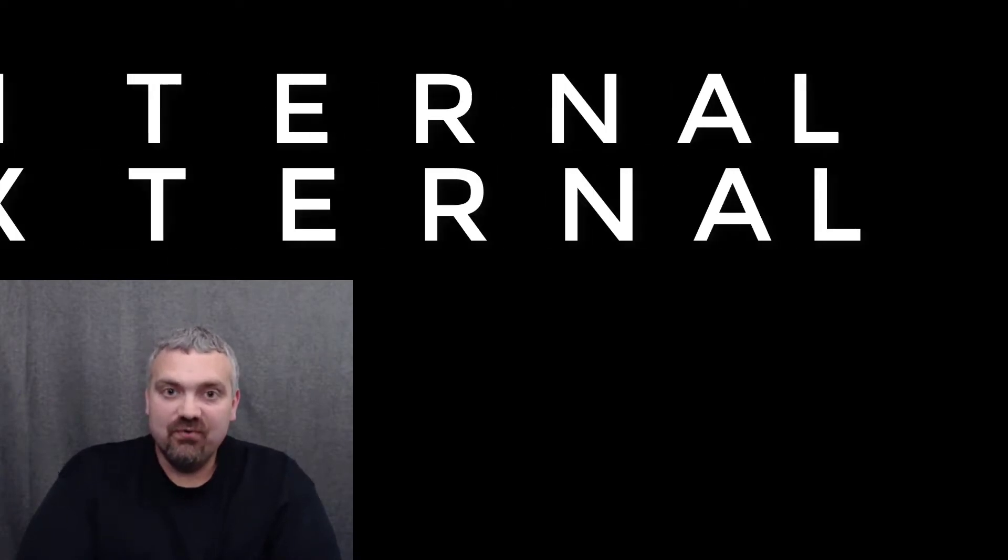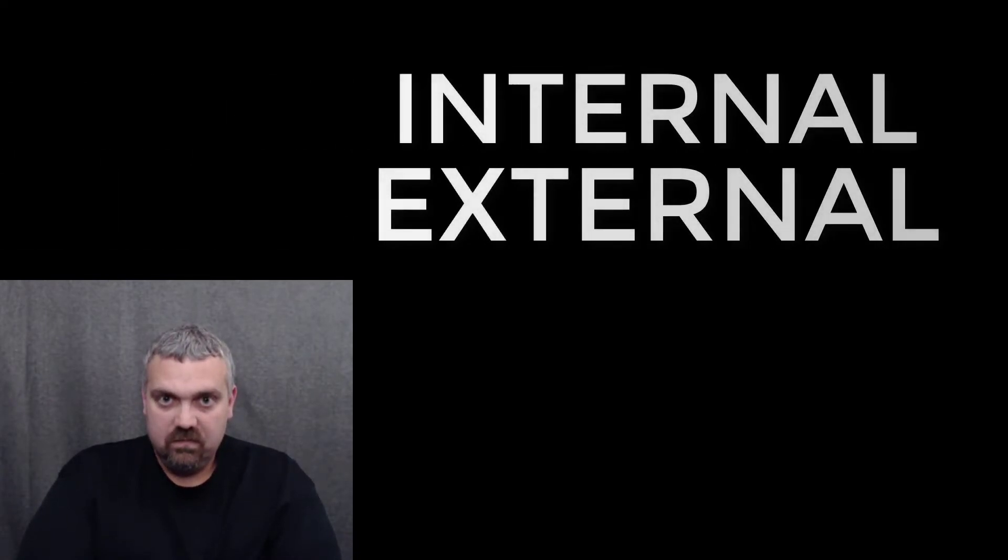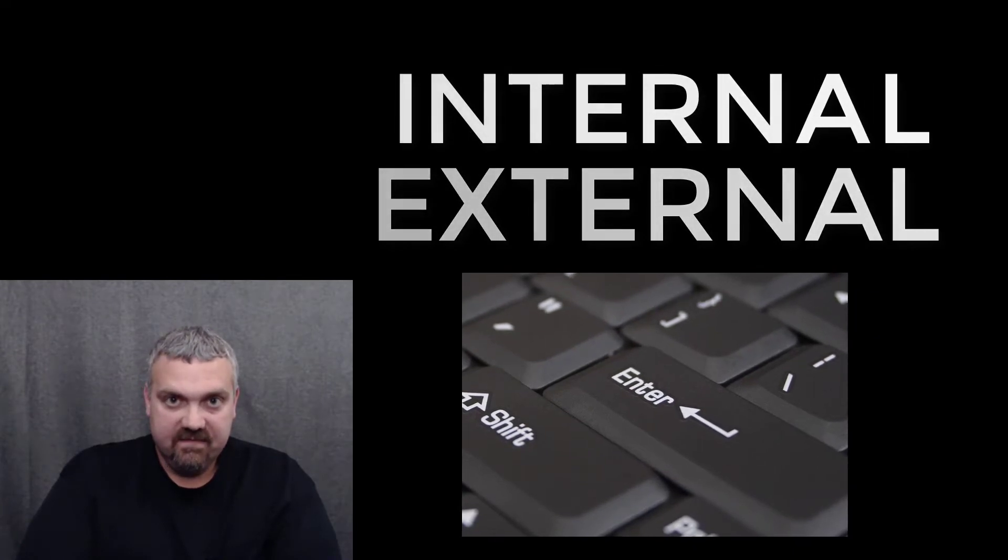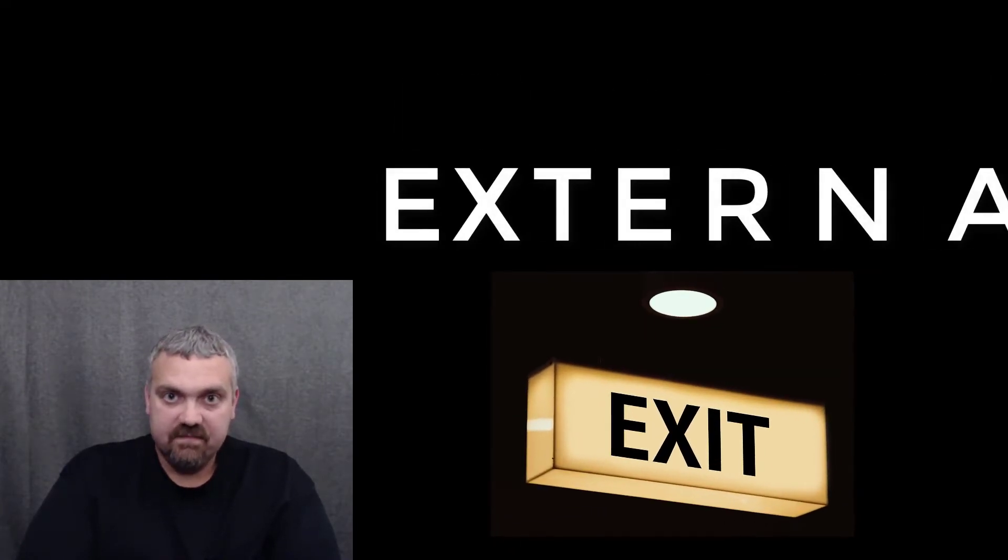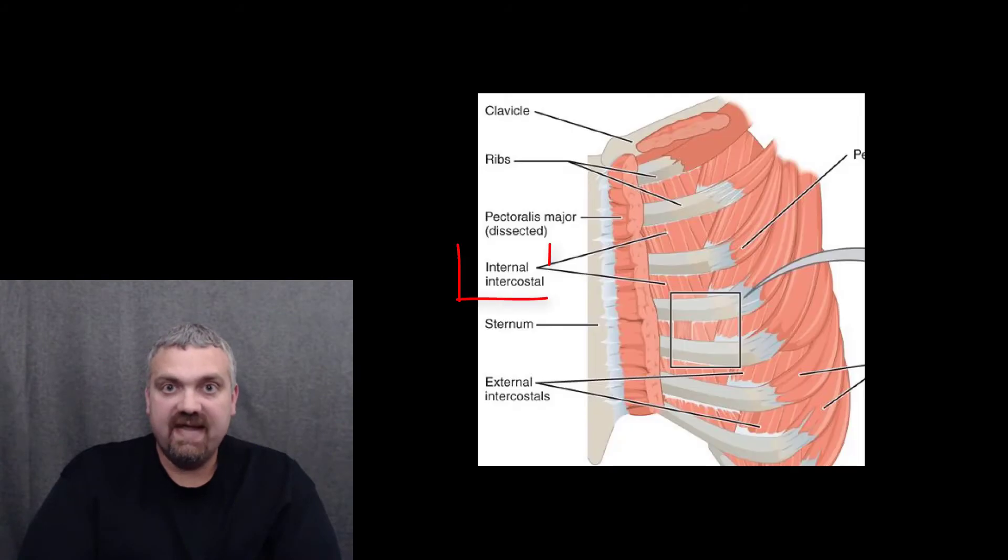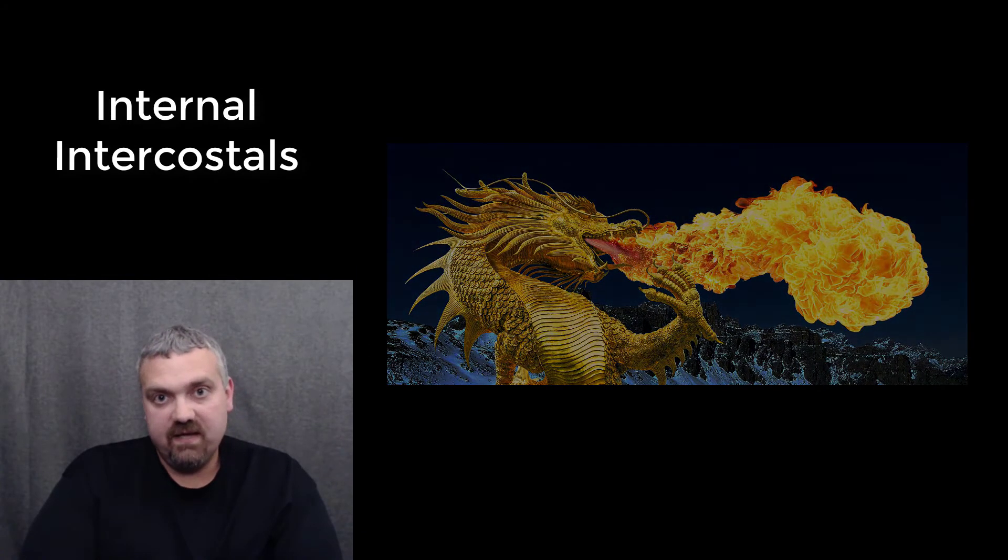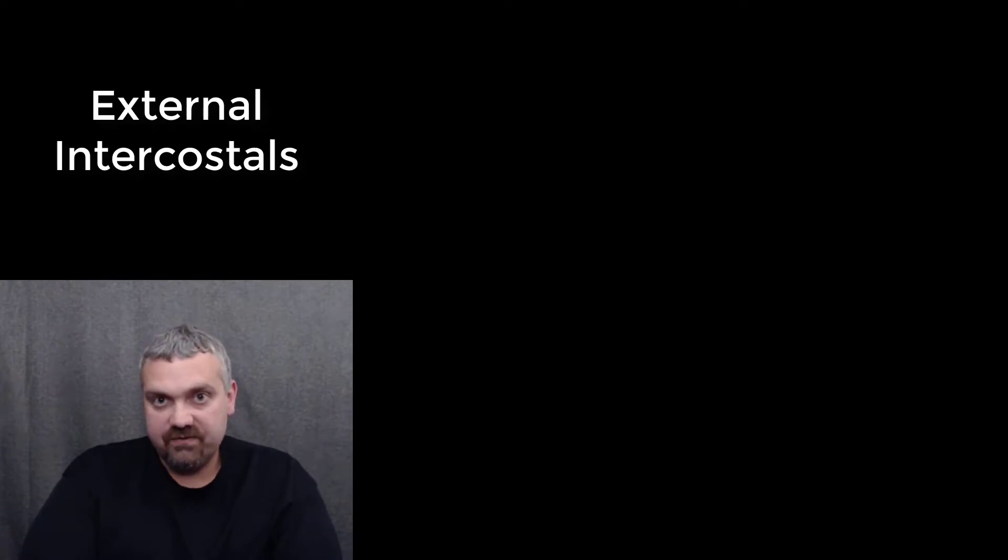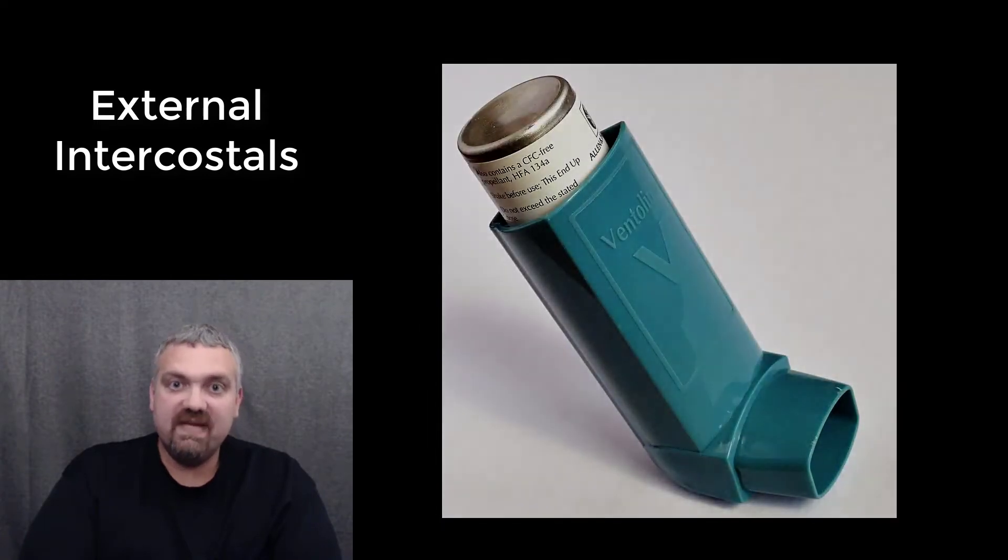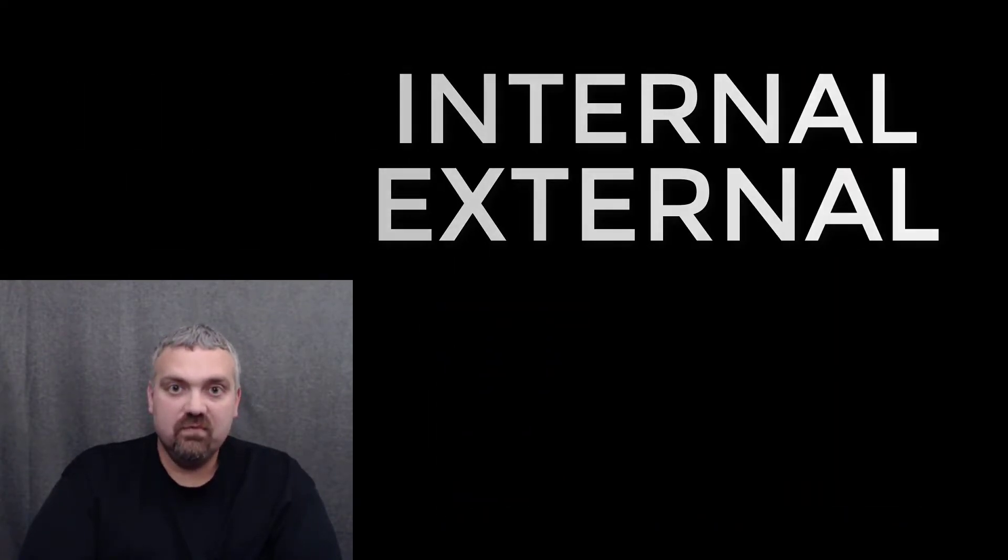Next, I want to compare internal to external. So internal means on the inside. External means on the outside. So the key example here would be your internal and external intercostals. So intercostals means within or between your ribs. So the internal intercostals are on the inside, and when they contract, they squeeze the ribcage together as you exhale. The external intercostals are on the outside, and when they contract, they pull your ribcage apart as you inhale. So internal versus external.